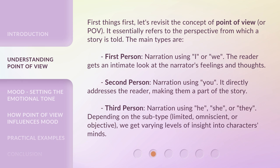Second person — narration using 'you.' It directly addresses the reader, making them a part of the story. Third person — narration using 'he,' 'she,' or 'they.' Depending on the subtype — limited, omniscient, or objective — we get varying levels of insight into characters' minds.